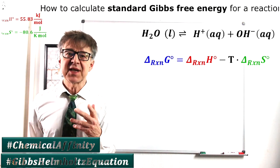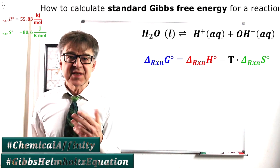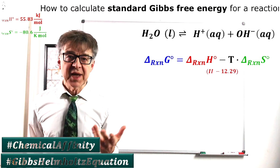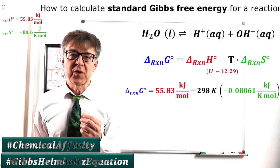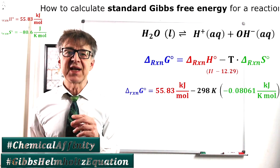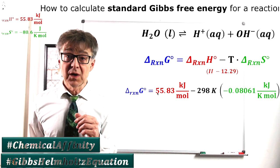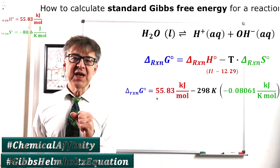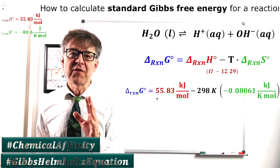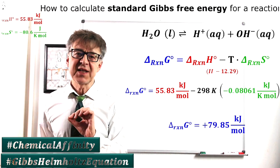Let's calculate delta G with the Gibbs-Helmholtz equation. Delta G naught equals delta H naught minus T times delta S naught. We plug in delta H 55.83 kilojoules and delta S negative 0.08 joules per kelvin and get a delta G of approximately plus 80 kilojoules.